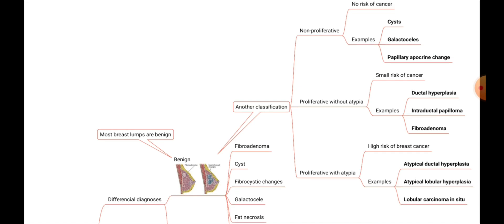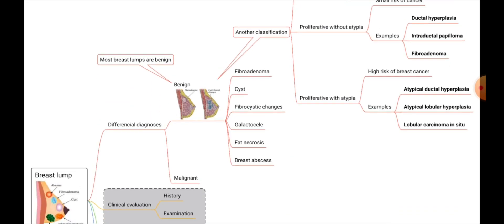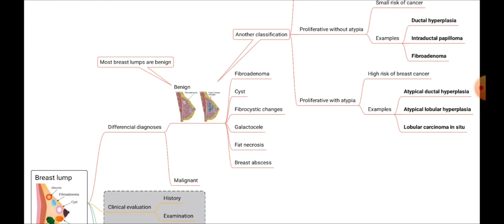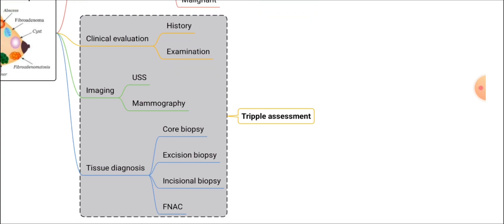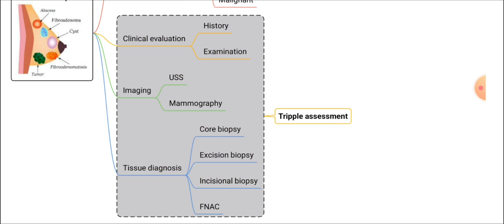Those are the examples for differential diagnosis of breast lump. You should know the benign and malignant breast lesions. The assessment of a breast lump is done through the triple assessment. It includes: first, clinical evaluation; second, imaging; and third, tissue diagnosis. Clinical evaluation includes history and examination. Imaging is done with ultrasound scan and mammography.